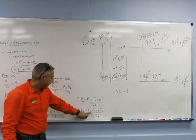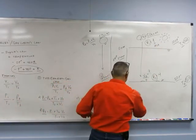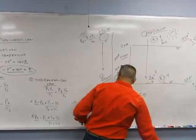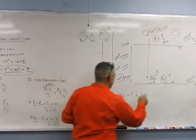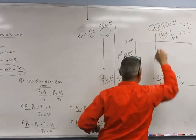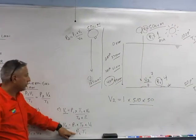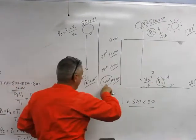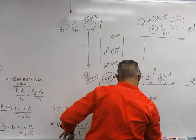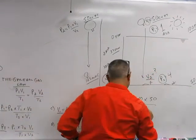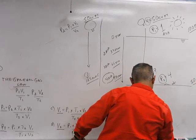And then it's going to say times T2. What is T2? 510. And then it's going to say times V1. What is V1? 50 cubic feet. Divided by P2. What is P2? P2 is 4 atmospheres. Times T1. What's T1? 560.